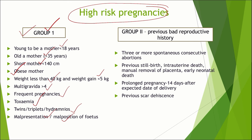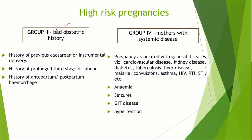Group 2 high-risk pregnancies are those with a previous bad reproductive history, where 3 or more spontaneous consecutive abortions have occurred, previous stillbirth, intrauterine death, manual removal of the placenta, early neonatal death, prolonged pregnancy 14 days after expected date of delivery, and previous scar dehiscence. Group 3 high-risk pregnancies consist of bad obstetric history, including history of previous cesarean or instrumental delivery, history of prolonged third stage of labour, and history of antepartum or postpartum hemorrhage.